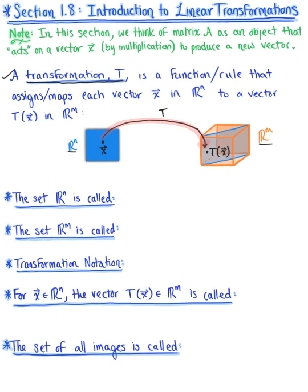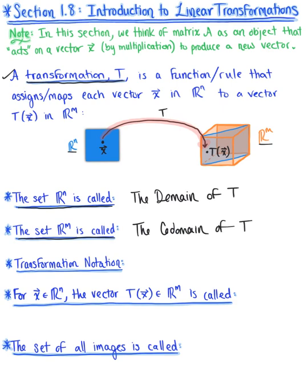This should be looking familiar — this is a function. The set Rn here is called the domain of our transformation T. The set Rn is called the codomain of our transformation T. So this set Rn in our illustration is the domain, and this set Rn is the codomain.